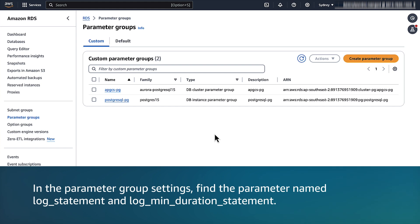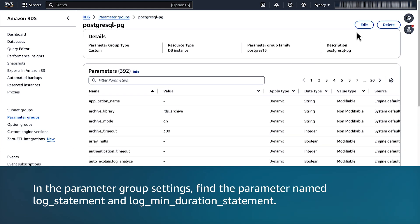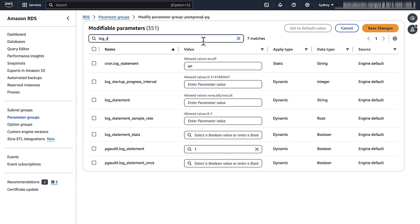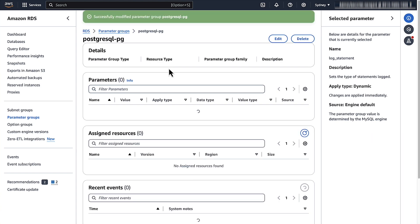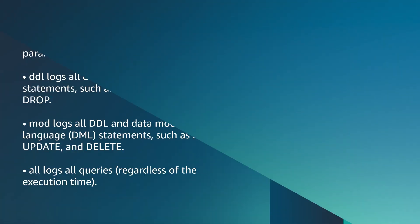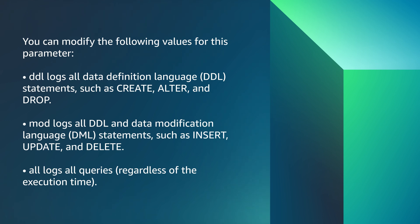In the parameter group settings, find the parameters named log_statement and log_minimum_duration_statement. Enter log_statement and then change the value to DDL. You can modify the following values for this parameter: DDL, which logs all data definition language statements such as create, alter, and drop; MOD, which logs all DDL and DML statements such as insert, update, and delete; and ALL, which logs all queries regardless of execution time.